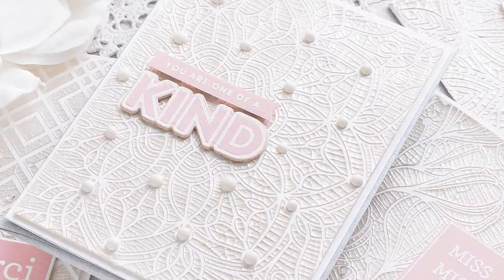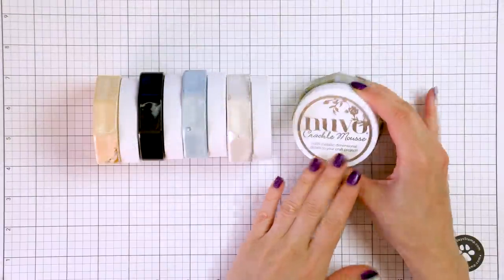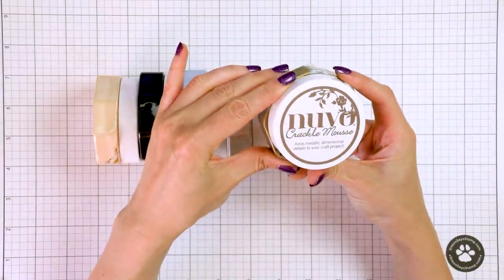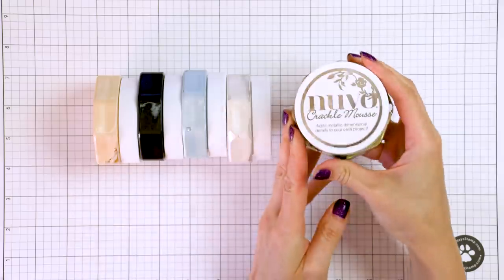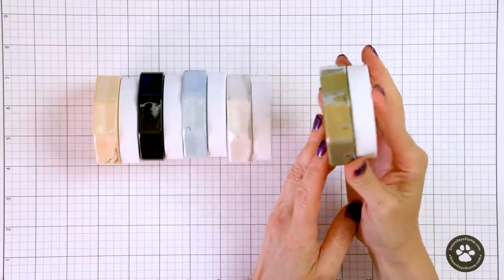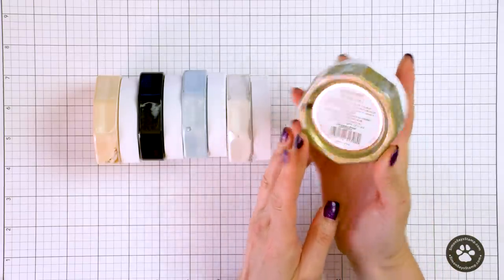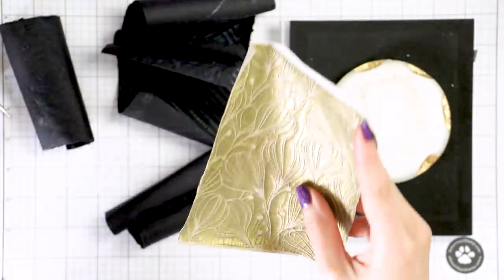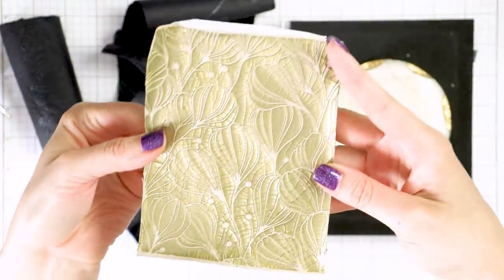These add metallic dimensional details to your craft projects. They are currently available in 8 colors and I have 5 colors to show you in this video. This first one I'm holding is Egyptian gold and this is what it looks like on craft once dry.